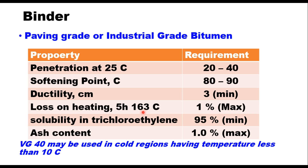Loss on heating 1% maximum. Solubility in tri-chloroethylene 95% minimum. Ash content should not be more than 1%. But in case of cold regions having temperature less than 10 degrees centigrade, VG40 can also be used as a binder.